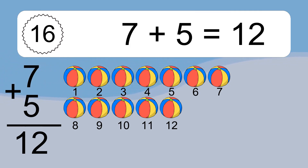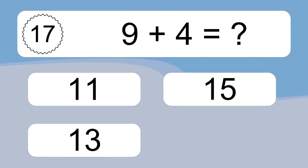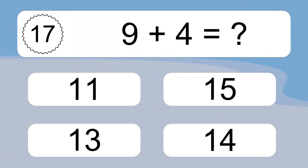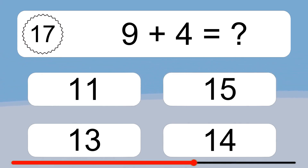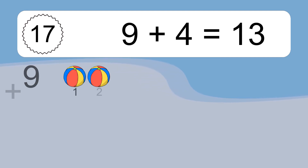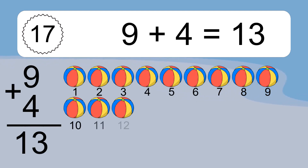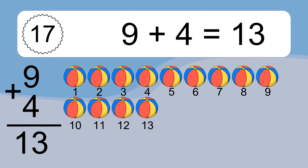7 plus 5 equals what? 7 plus 5 equals 12. Let's count it. 1, 2, 3, 4, 5, 6, 7, 8, 9, 10, 11, 12. 9 plus 4 equals what? 9 plus 4 equals 13. Let's count it. 1, 2, 3, 4, 5, 6, 7, 8, 9, 10, 11, 12, 13.